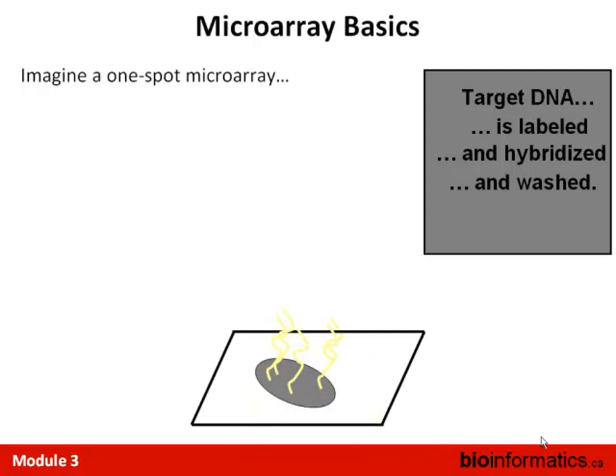A wash is then done — and this has to be done carefully. It has to be stringent enough to remove all nonspecific binding, but not so stringent as to remove actual Watson-Crick base pair binding. It must be at the right salt concentration, right temperature, and right buffers. If done correctly, for each feature only Watson-Crick base pair binding for exact matches remains.